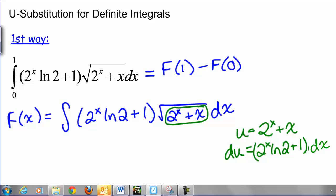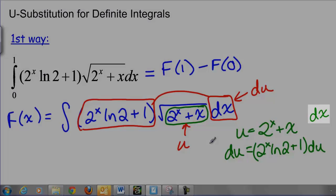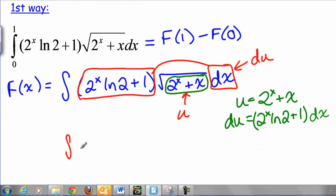Well hey, look at that. That's exactly what we have here, right? Here's 2 to the X natural log of 2 plus 1 times dx. So that whole thing is just going to become du. And the inside of the square root becomes our u. So our new integral is square root of u du, which remember is u to the 1/2 du.